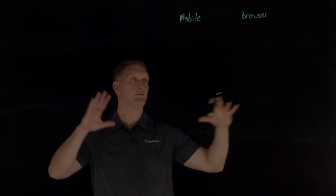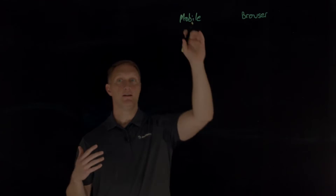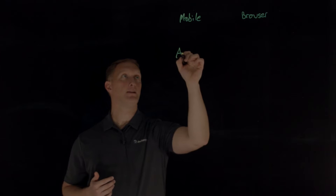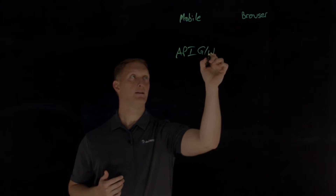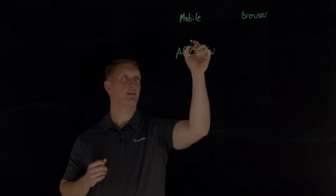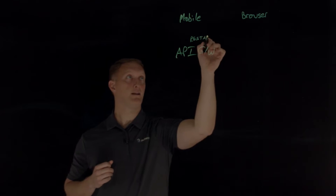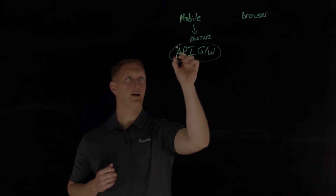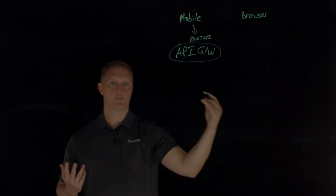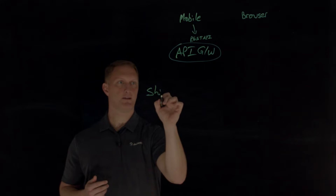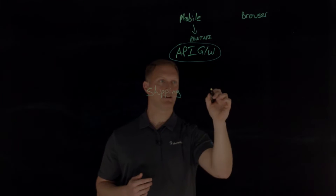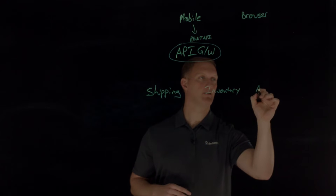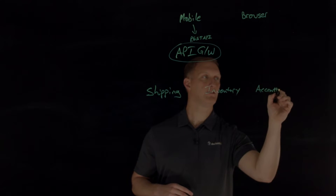A diagram here to explain it all: mobile application traffic comes into an API gateway, and then there's a REST API that interacts with the mobile traffic and brings that traffic into the API gateway. The API gateway is connected to a variety of different services — shipping, inventory, and account services.